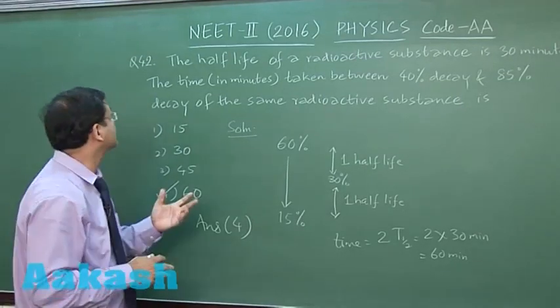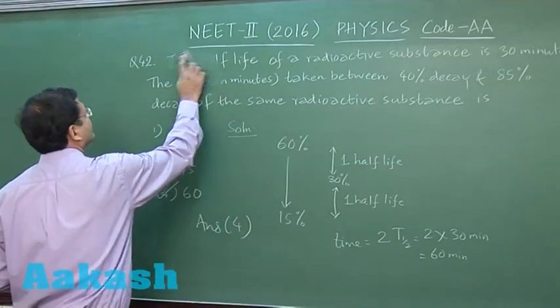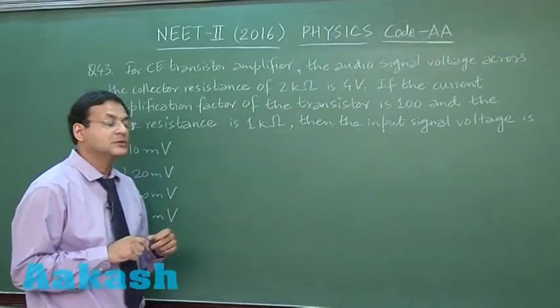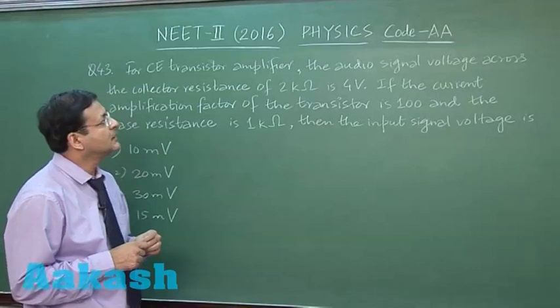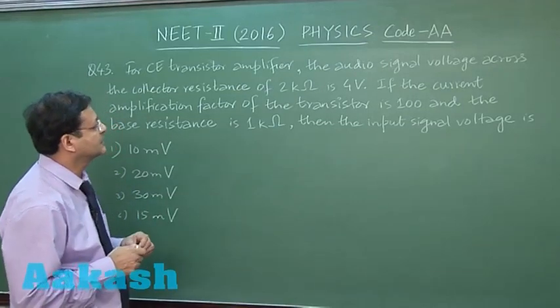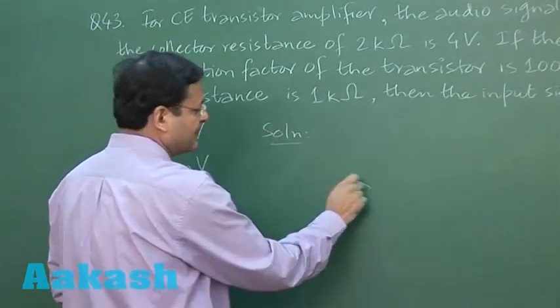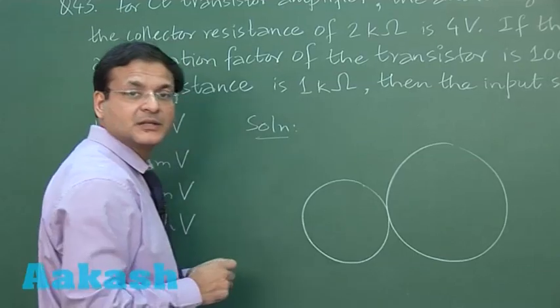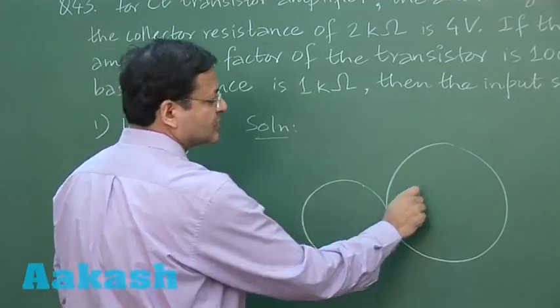This question 43 is based on common emitter transistor amplifier circuit. For common emitter, the base happens to be the input side and the collector happens to be the output side.